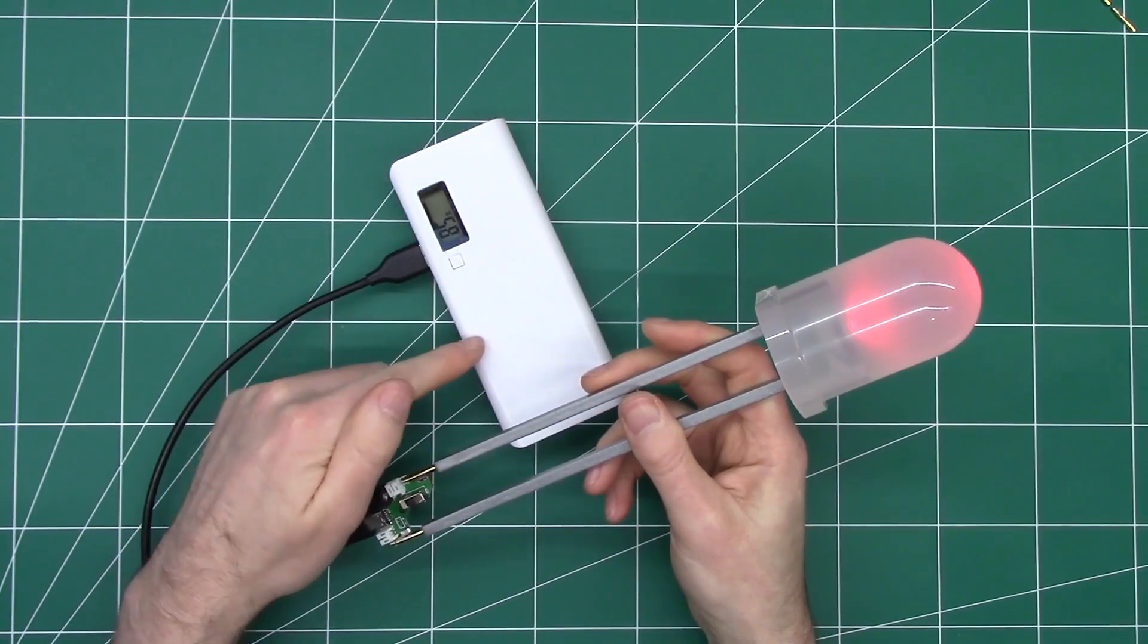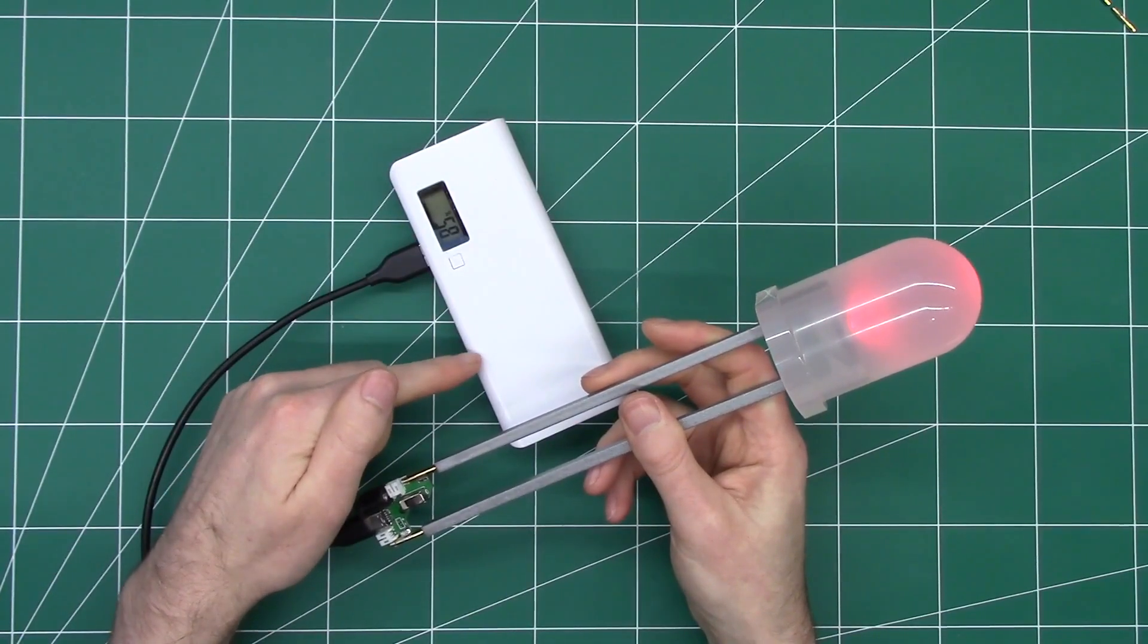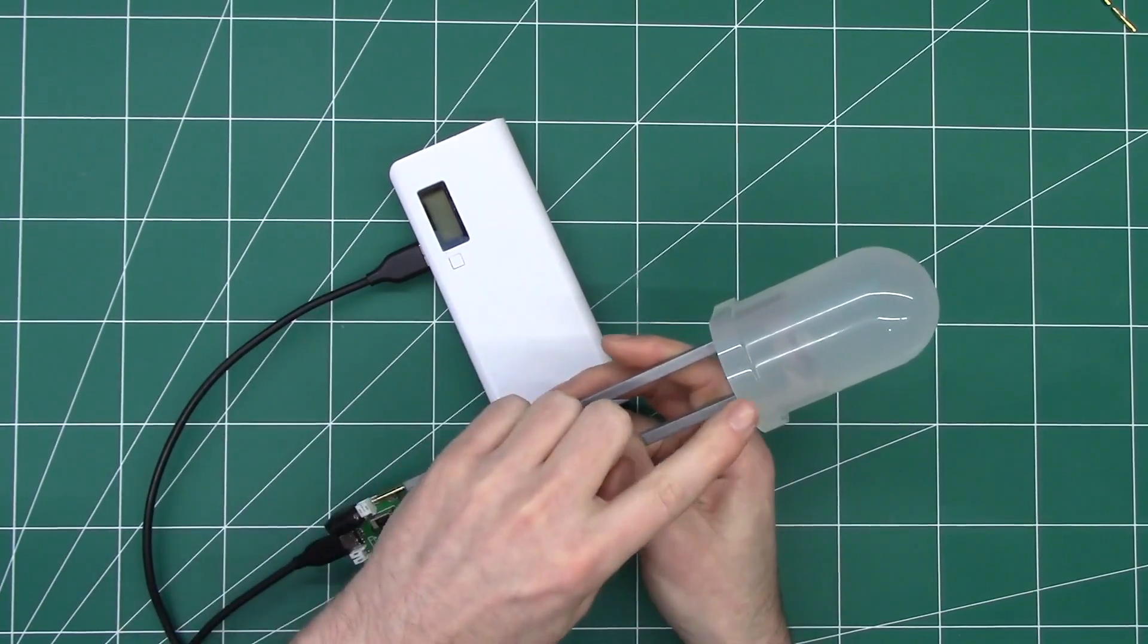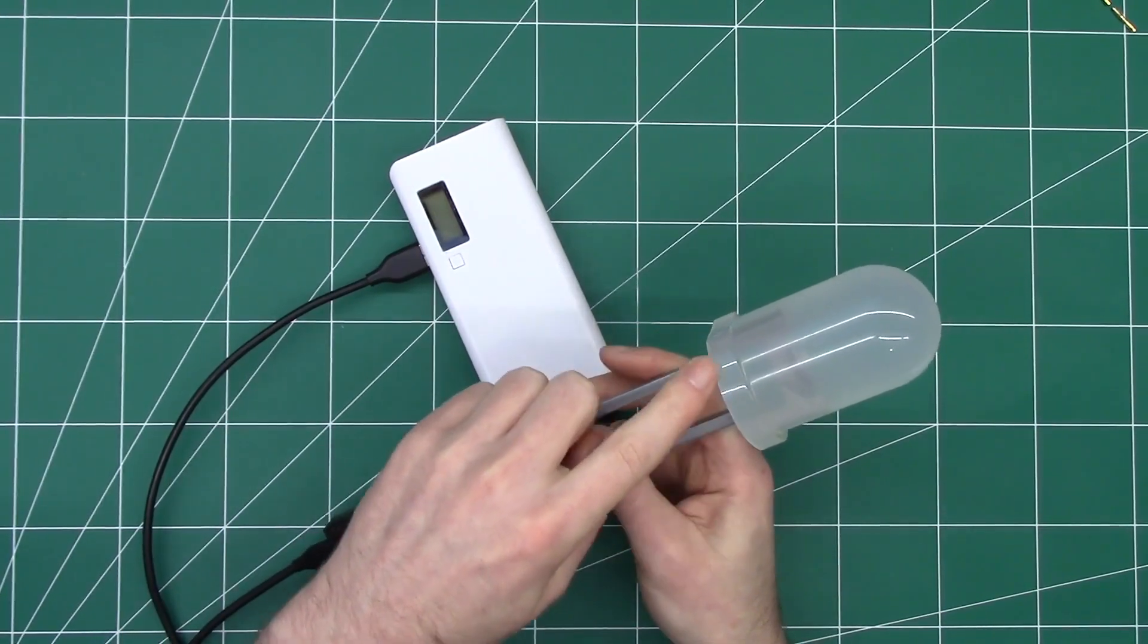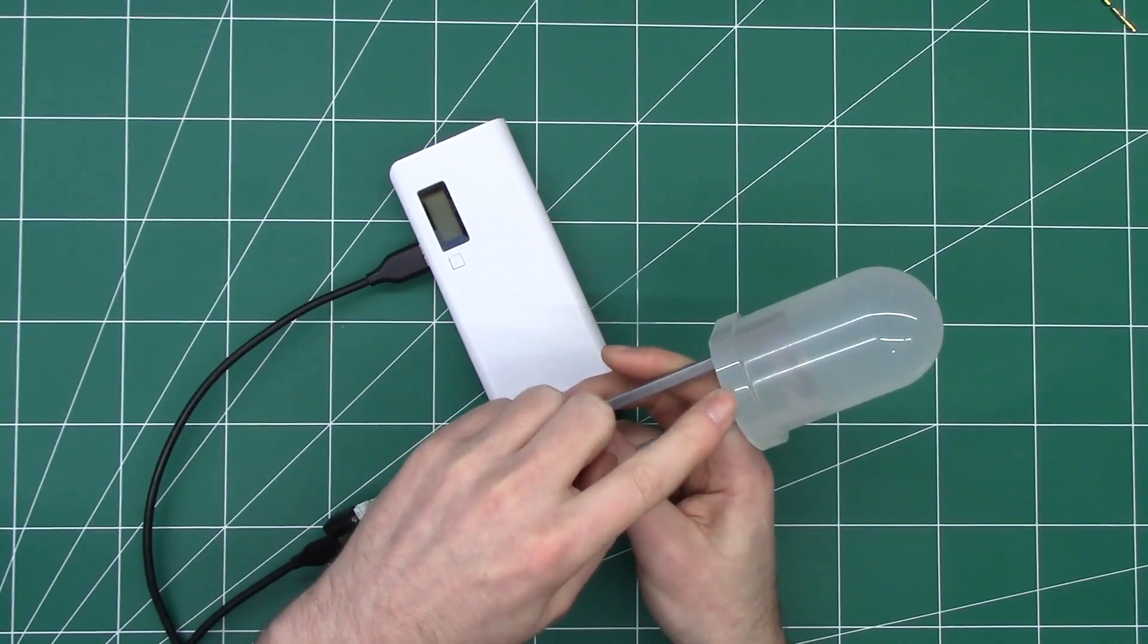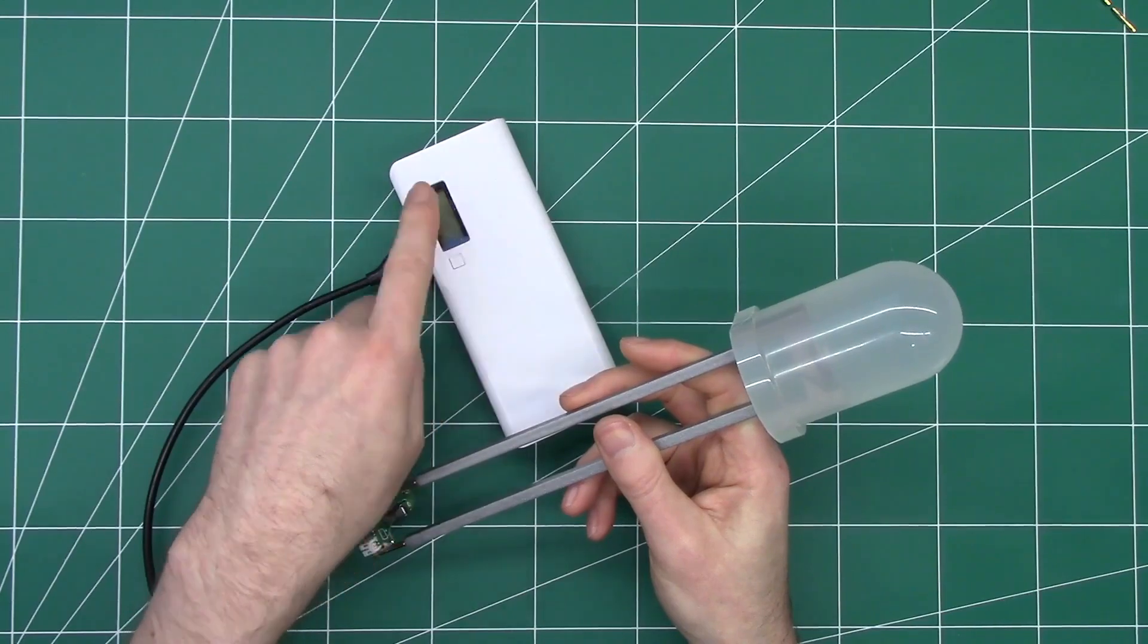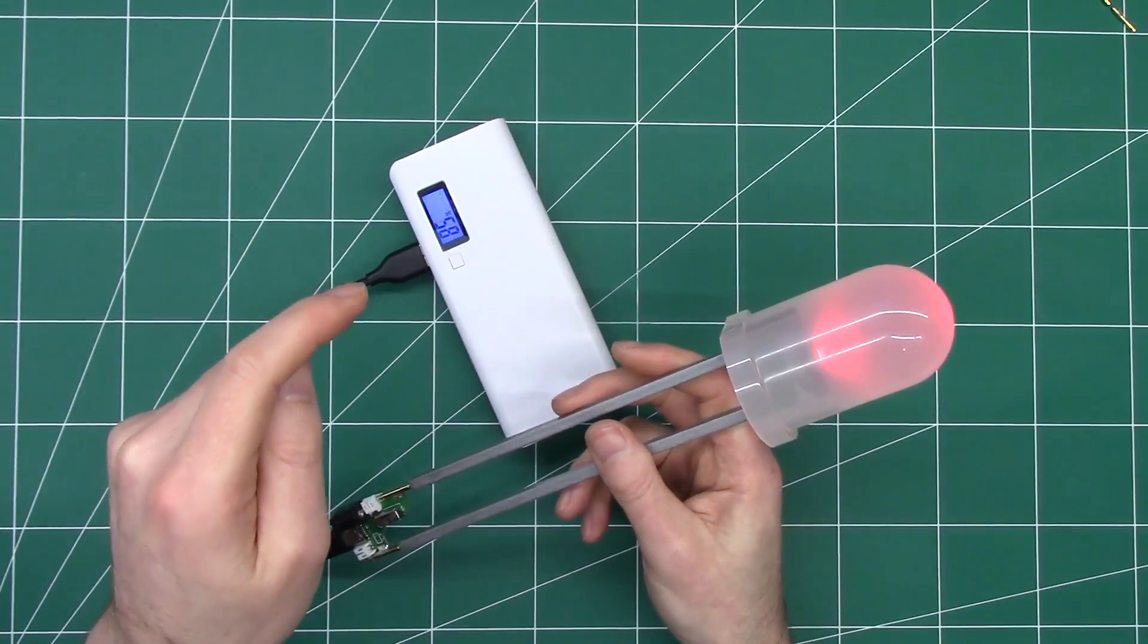A lot of USB battery banks have inbuilt circuitry that turns them off if there's not enough current being drawn. Because the LED only needs 20 milliamps, that's usually below what is required to keep a battery bank on, so not all battery banks will be suitable.